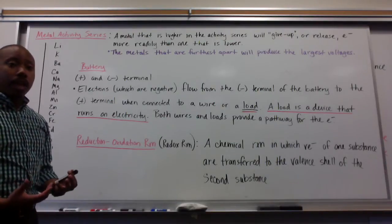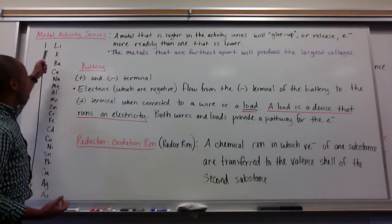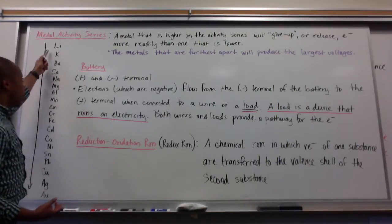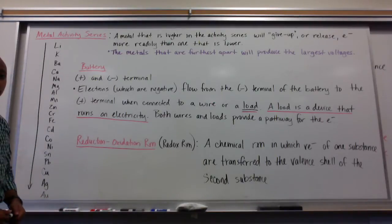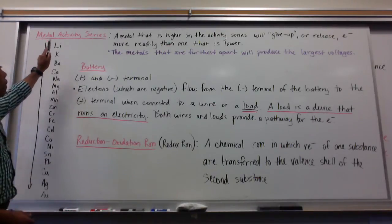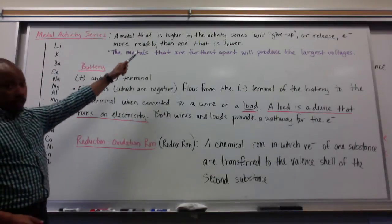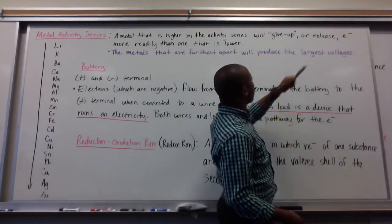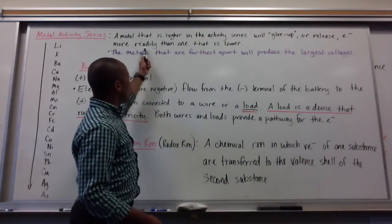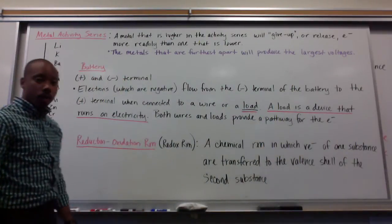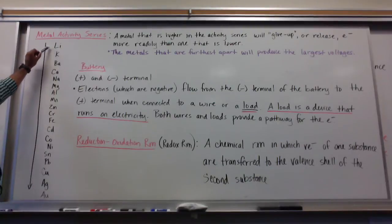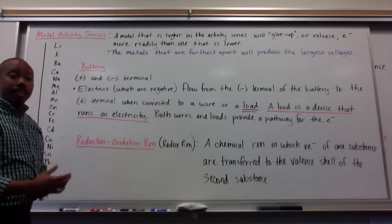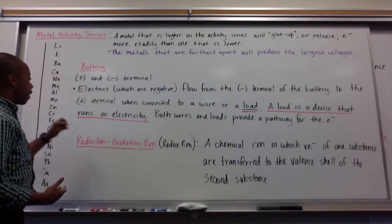In our battery that we built in class, we saw that we had two different strips of metals, and they were at different points on the activity series. A metal that is higher on the series will give up or release electrons more easily or more readily than one that is lower. So, metals higher on the series will have higher electron releasing tendencies than something that is lower.